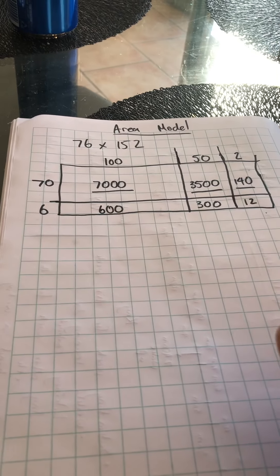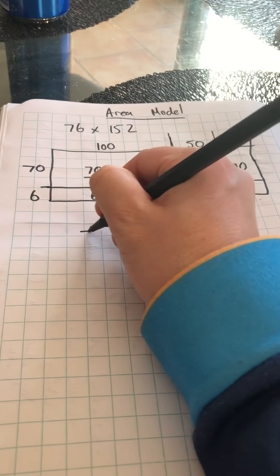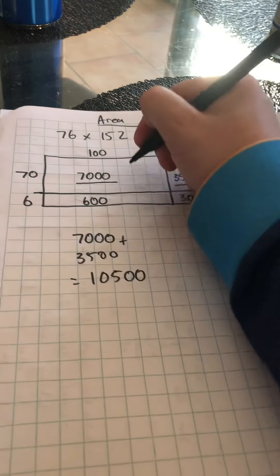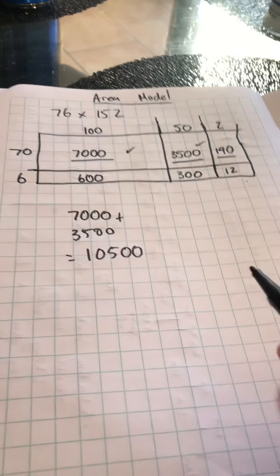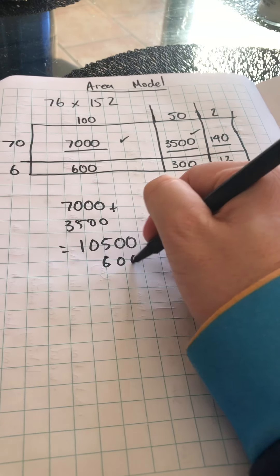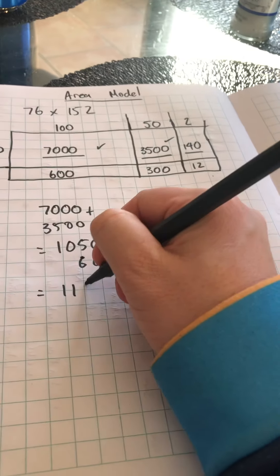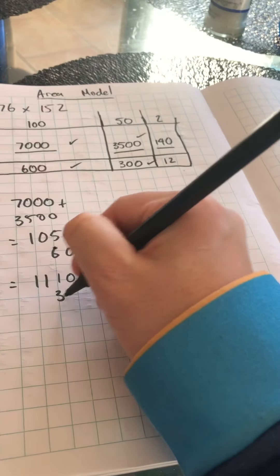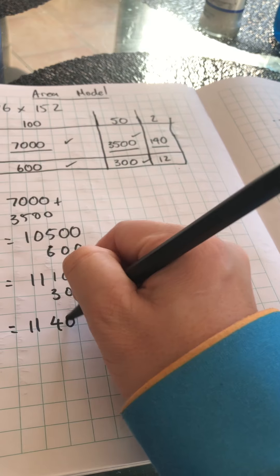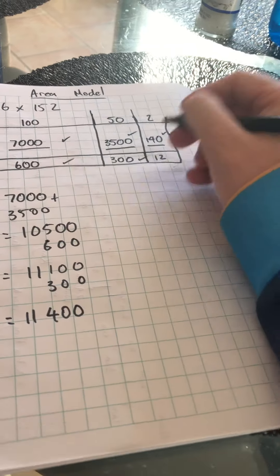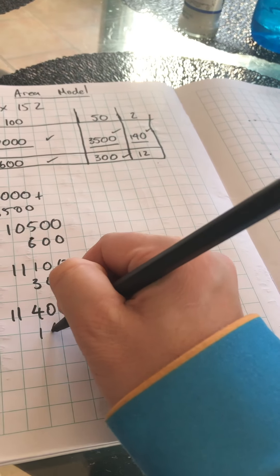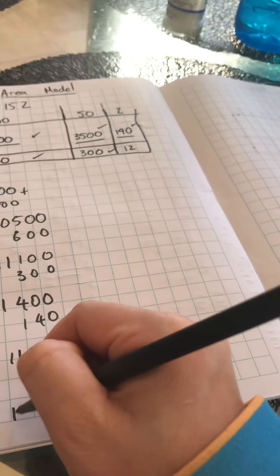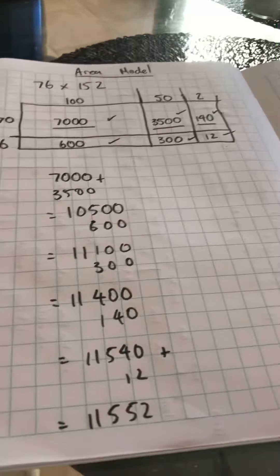Now that I've filled up all these spaces here, I can now add these numbers together. So I know that 7,000 plus 3,500 equals 10,500. I can see 600 here. I'm going to add that, so 10,500 plus 600 equals 11,100. My next part I need to add is the 300 here, adding 300 to my total, 11,400. I'm now going to add 140, so 11,400 plus 140 is 11,540. The last one I need to add is the 12. 11,552. That's my total.